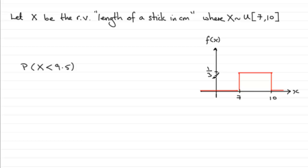This is key: to find the probability that X is less than 9.5, we need to locate 9.5 on this rectangle.